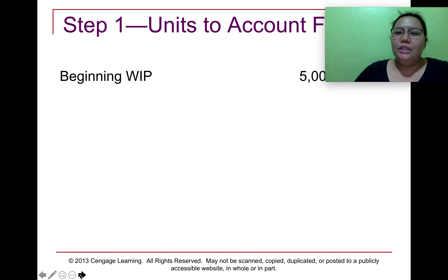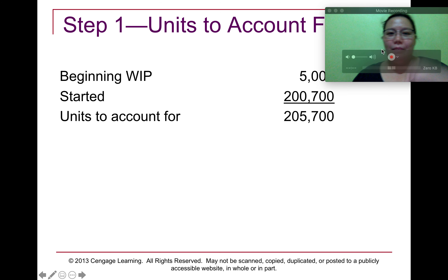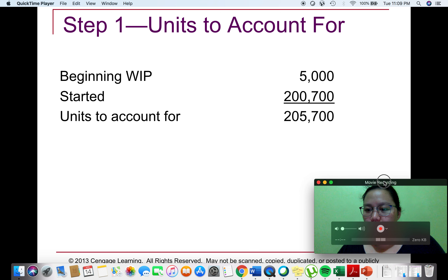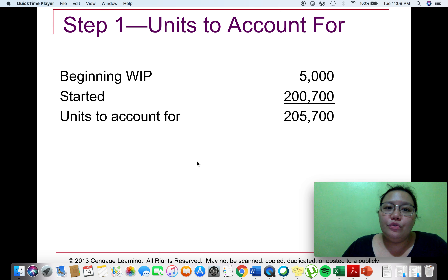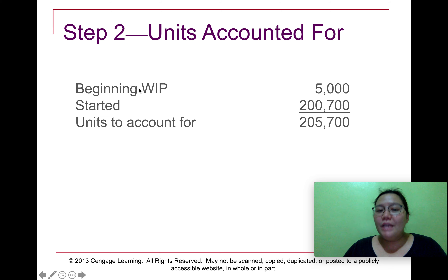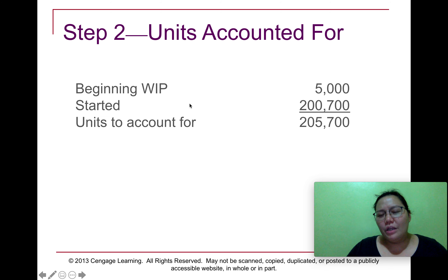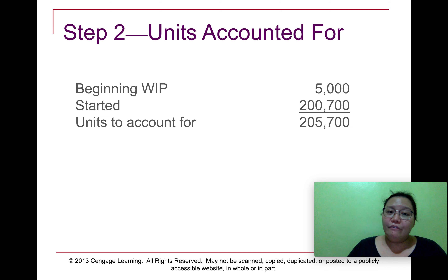Step 1 is to compute the units to account for. The units to account for is simply the sum of the number of units in the beginning work in process inventory and the number of units started for the current month.